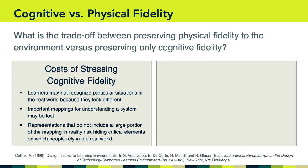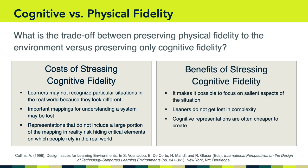This has implications for recognizing and understanding right angles in the real world. Other costs of emphasizing cognitive fidelity include losing important mappings for understanding a system — representations that do not include a large portion of reality's mapping risk hiding critical elements on which people rely in the real world. On the flip side, benefits of stressing cognitive fidelity include being able to focus on the salient aspects of the situation or concept, helping learners avoid getting lost in real-world complexity, and cognitive representations often being cheaper to design than high-fidelity physical representations.